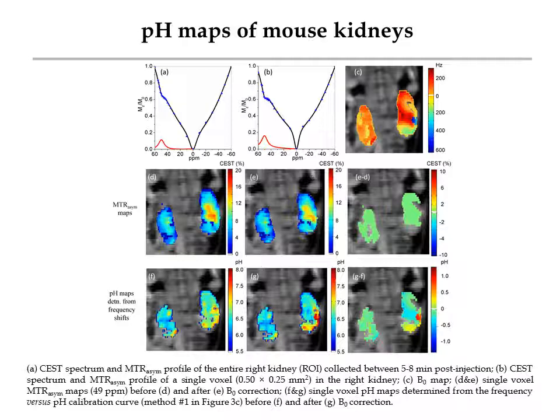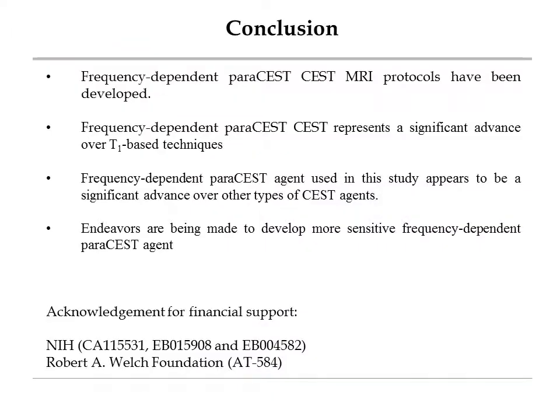Let's see the final in vivo imaging results. Figure A is the CEST spectrum and asymmetric curve from the entire right kidney region of interest. Figure B is the CEST spectrum and asymmetric curve from a typical voxel collected between 5 to 8 minutes post-agent injection. Figure C is the B0 maps. Figures D and E are the CEST intensity maps at 49 ppm before and after B0 correction. Figures F and G are the pH maps of kidneys before and after B0 correction. We found that the B0-corrected pH maps showed the expected pH gradient across the renal cortex and medulla. Our results indicate B0 correction is necessary to get reliable imaging results.